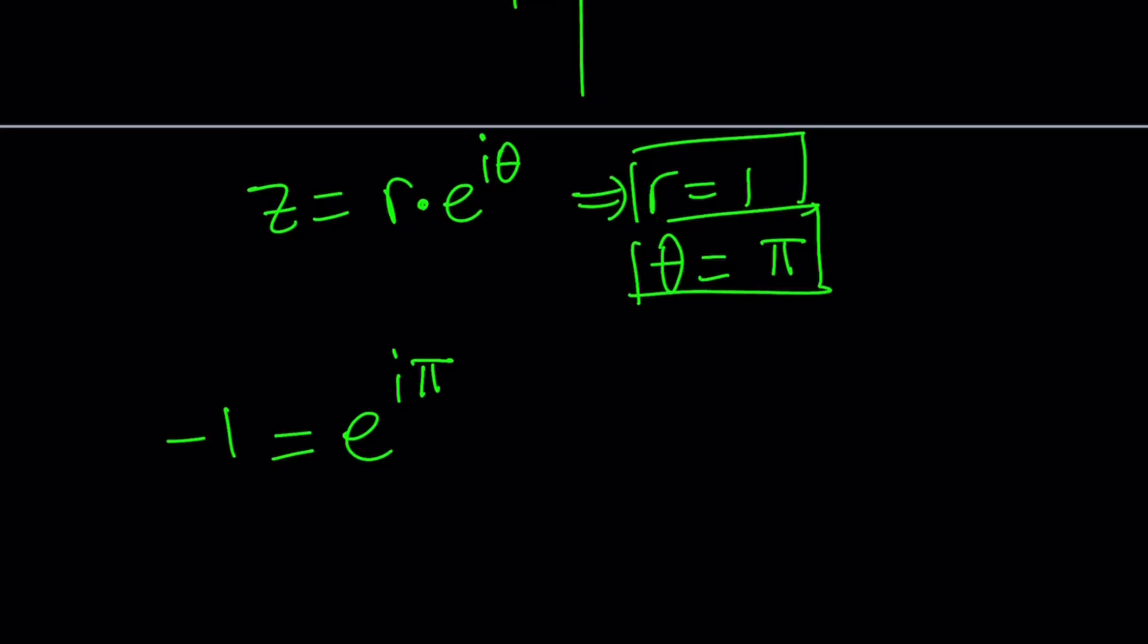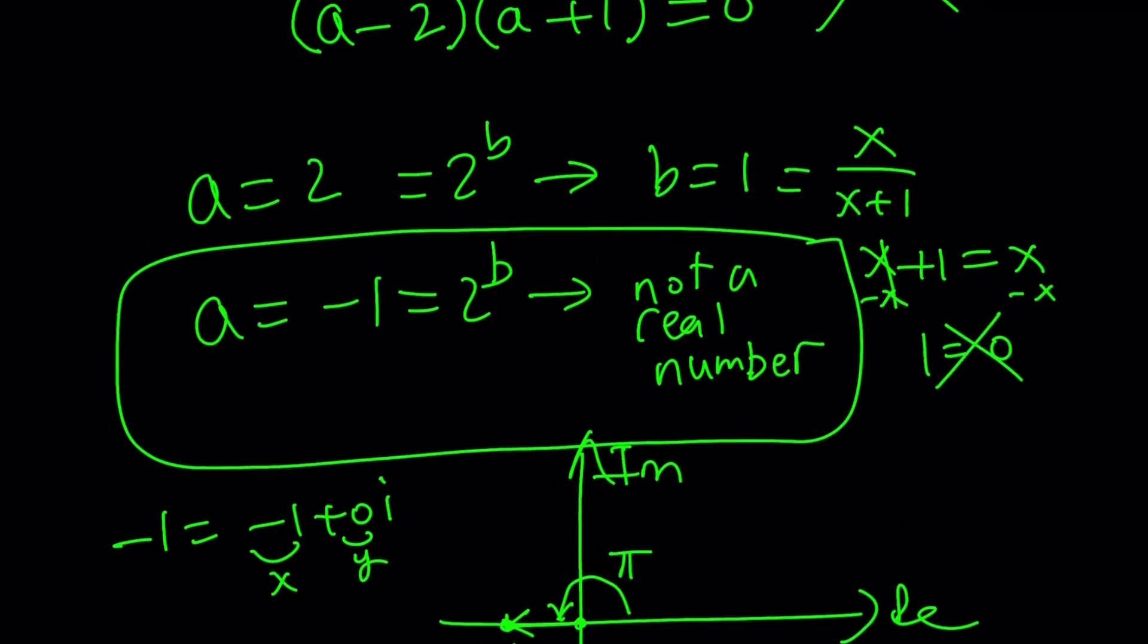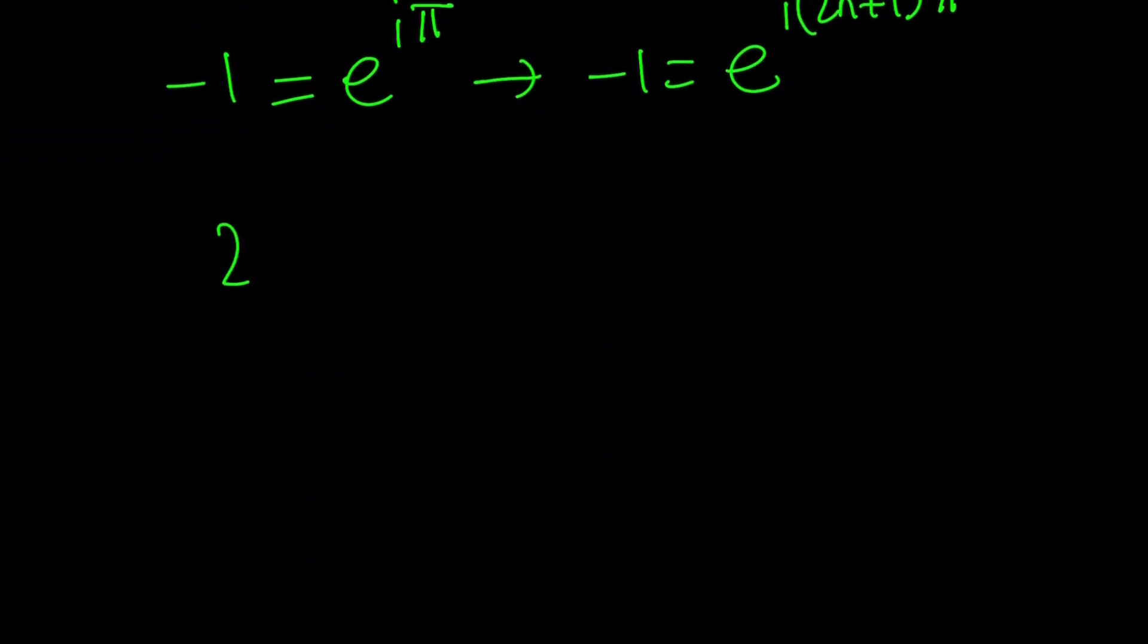Having given these, we can go ahead and write our number negative 1 as 1 times e to the power i pi. But that's just the principle branch. If you want the general form, then negative 1 can be written as e to the power i times 2n plus 1 times pi, where n is an integer. So, odd multiples of pi is always going to give you the same value with pi. Now, let's go ahead and plug this into our equation.